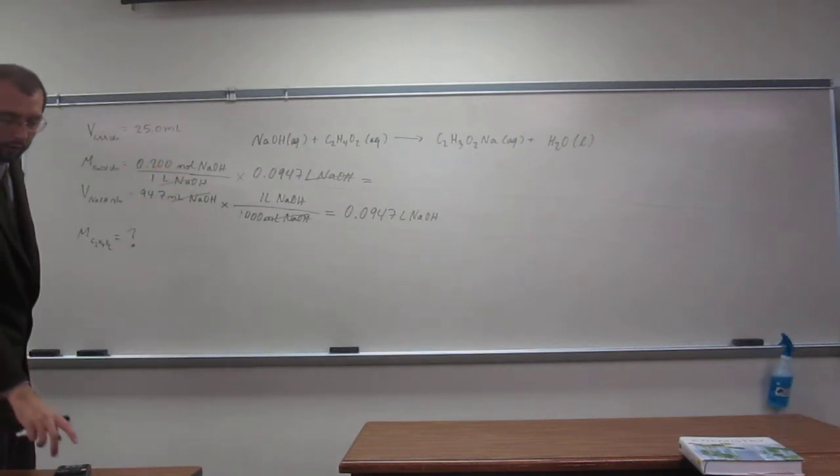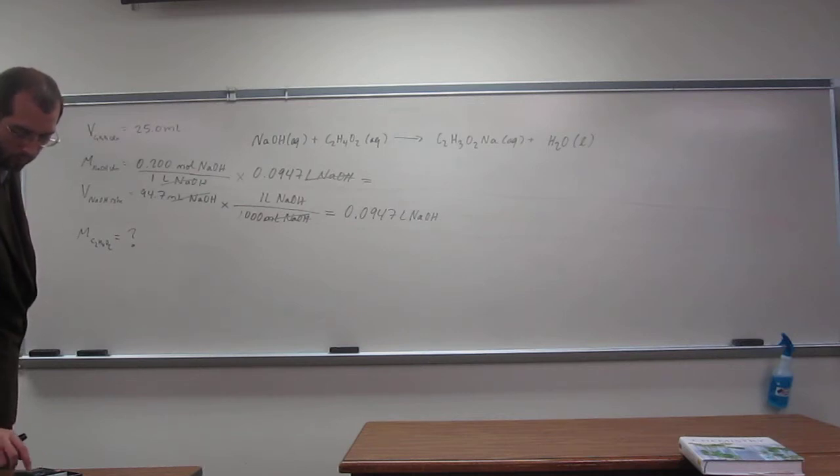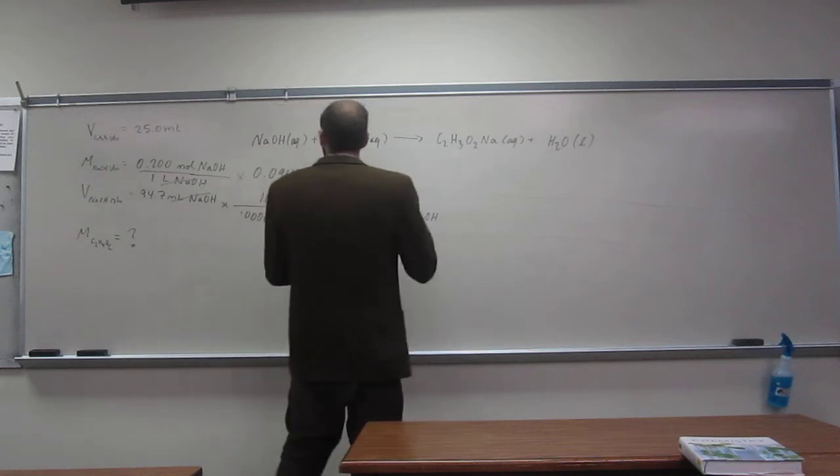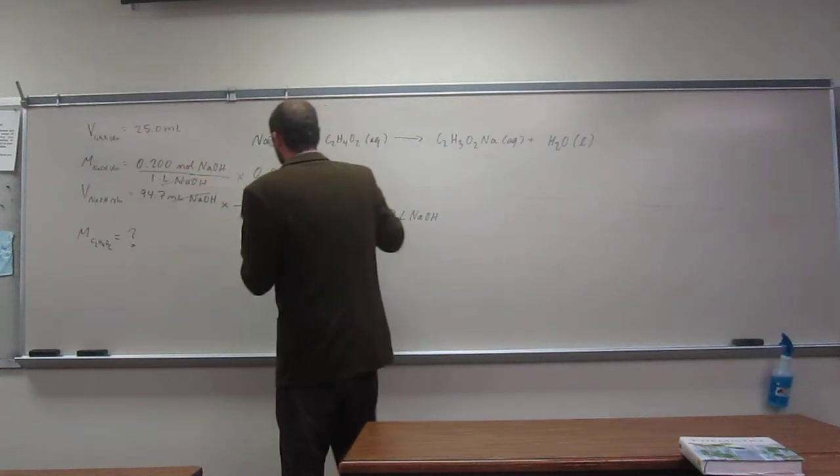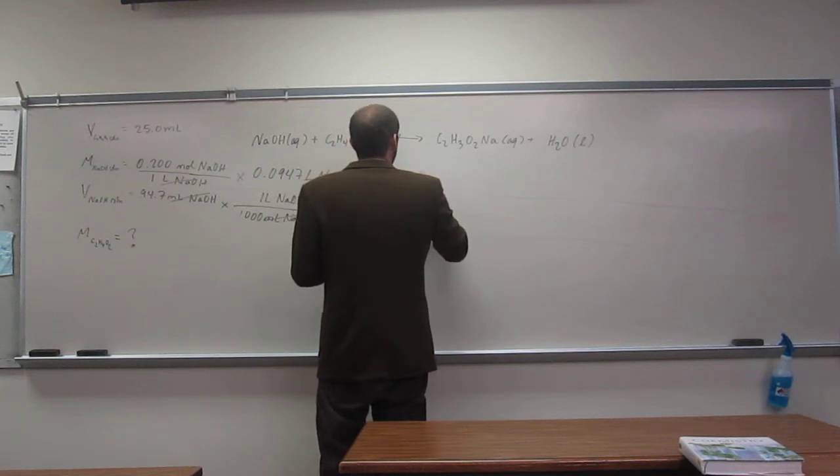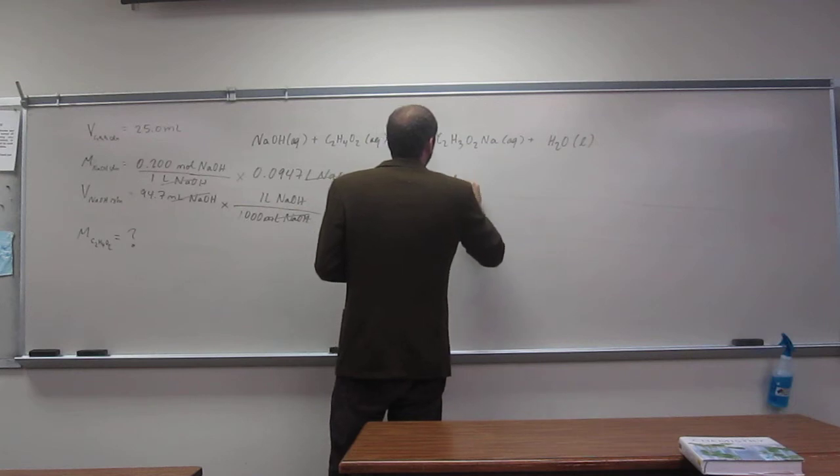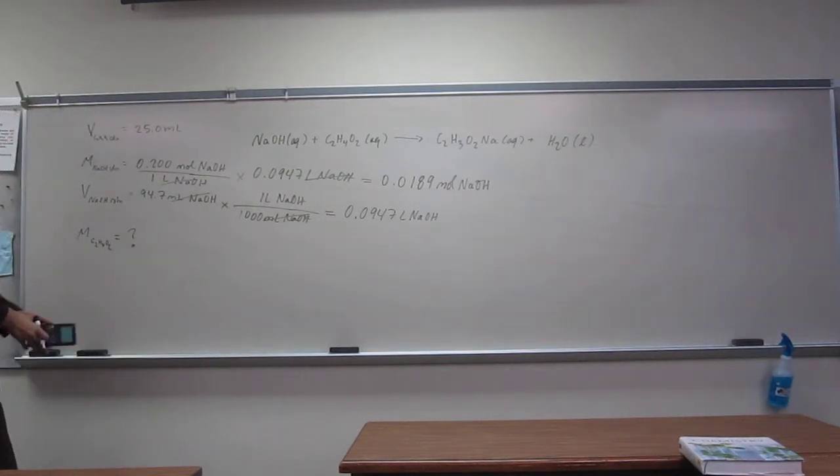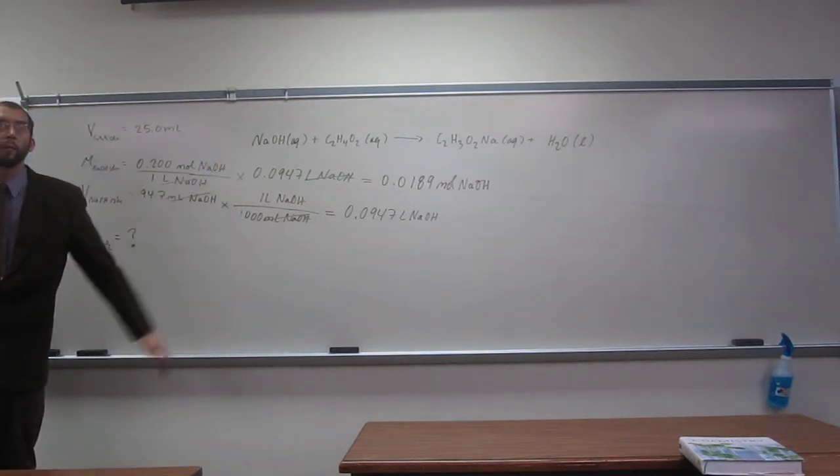So, three and three. So, this one's going to be a three. So, 0.0189 moles NaOH. So, is everybody okay to that point? We've got the moles of NaOH.